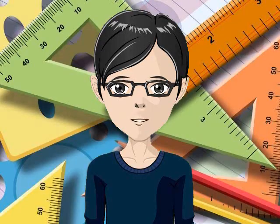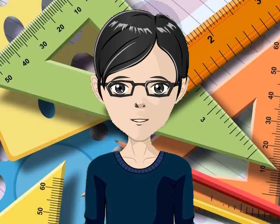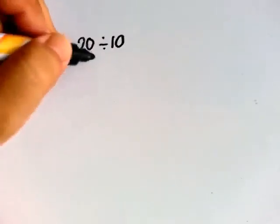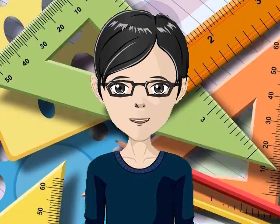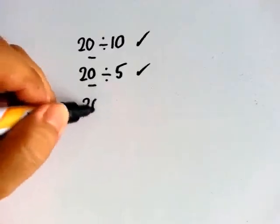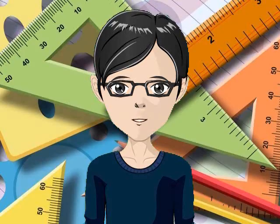Did you get everything correct? Here's a tip: a number that is divisible by 10 is also divisible by both 5 and 2. Kapag divisible daw by 10, divisible din yun sa 5 tsaka sa 2. Like 20, for example. 20 is divisible by 10 because it ends in 0. It is also divisible by 5 because it ends in 0, and divisible by 2 because it is an even number. Just remember the rules, okay?